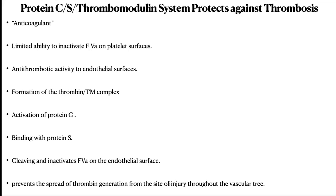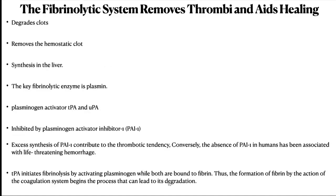Activated protein C and protein S do not normally turn off thrombin generation during hemostasis, but prevent the spread of thrombin generation from the site of injury throughout the vasculature. This is an important function, as propagation of thrombin generation on endothelium can lead to thrombosis. Both protein C and protein S deficiency can lead to a pro-thrombotic state. The fibrinolytic system has two critical activities that interface with the hemostatic system: it degrades clots that form within intact vasculature, protecting against thrombosis, and it removes the hemostatic clot during wound healing and tissue repair.